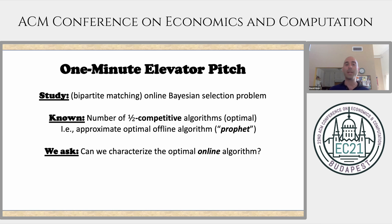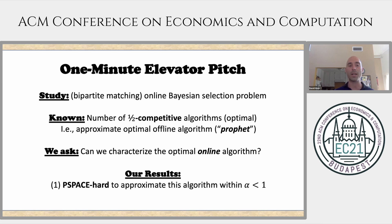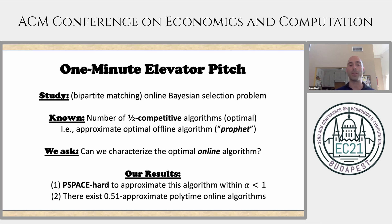So what we ask is: can we characterize the optimal online algorithm for this problem? What we show is a number of results — the first being a negative result showing that not only can we not characterize this optimal online algorithm, but it's actually PSPACE-hard to even approximate this algorithm within some universal constant bounded away from one. On the other hand, we also have positive results and show that a more natural benchmark is actually easier to approximate than the prophet, and we can get a better-than-one-half approximation in polytime.